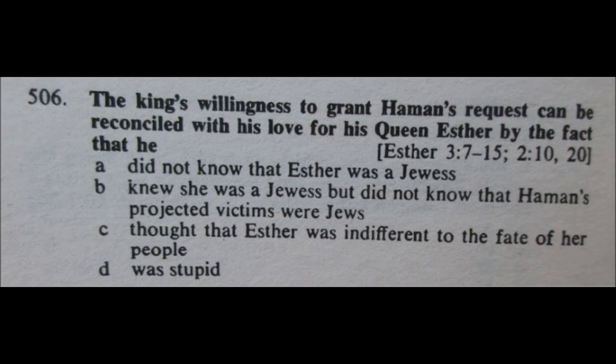Question number 506: The king's willingness to grant Haman's request can be reconciled with his love for his queen Esther by the fact that he A) did not know that Esther was a Jewess, B) knew she was a Jewess but did not know that Haman's projected victims were Jews, C) thought that Esther was indifferent to the fate of her people, or D) was stupid. I'll eliminate D and C, and go for A, did not know that Esther was a Jewess.